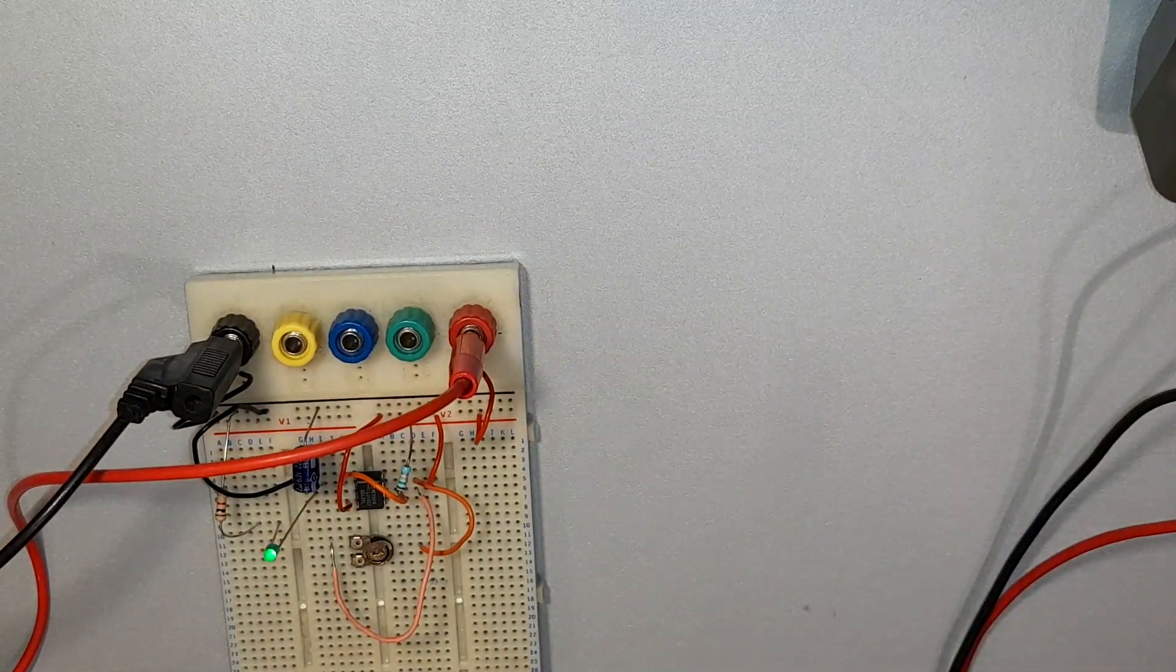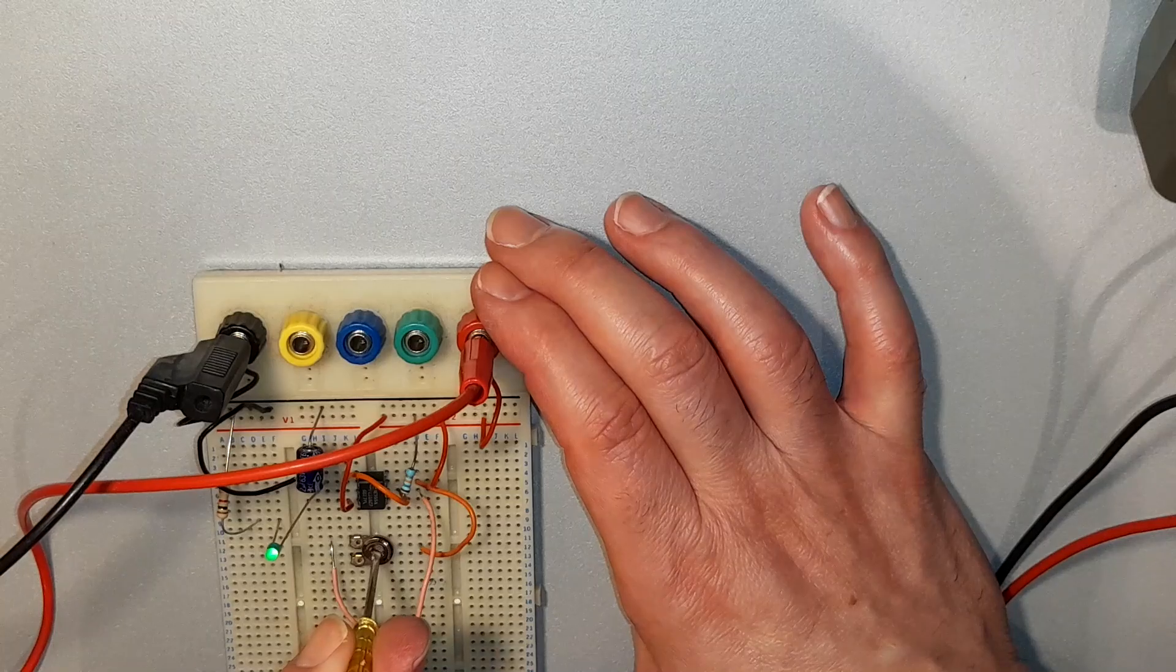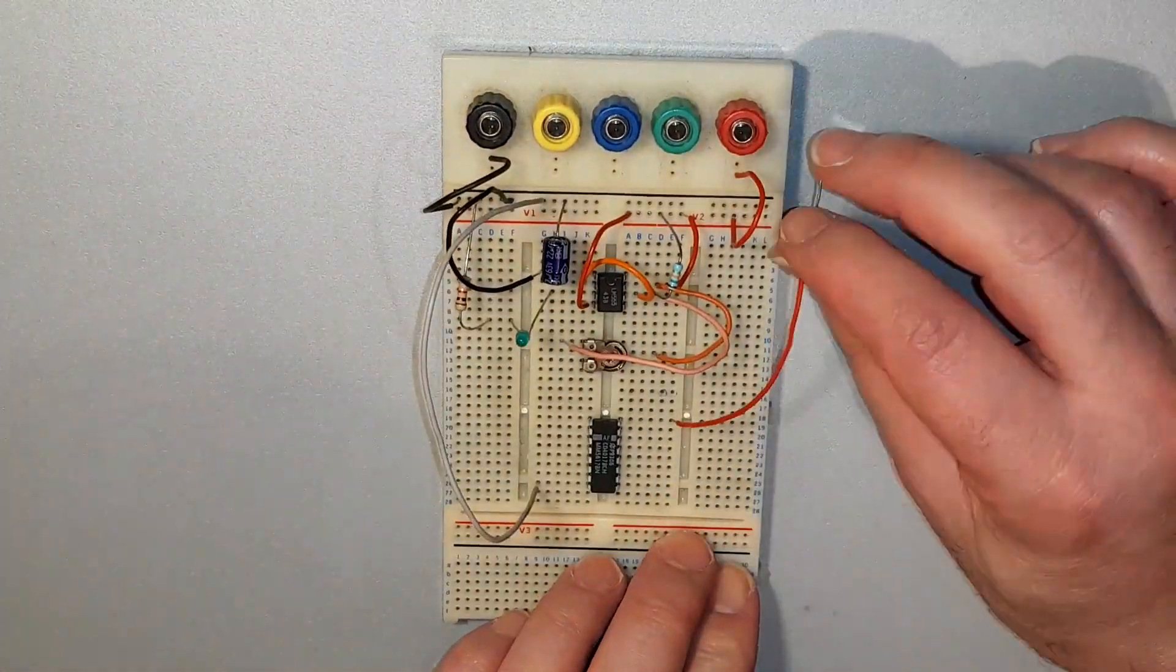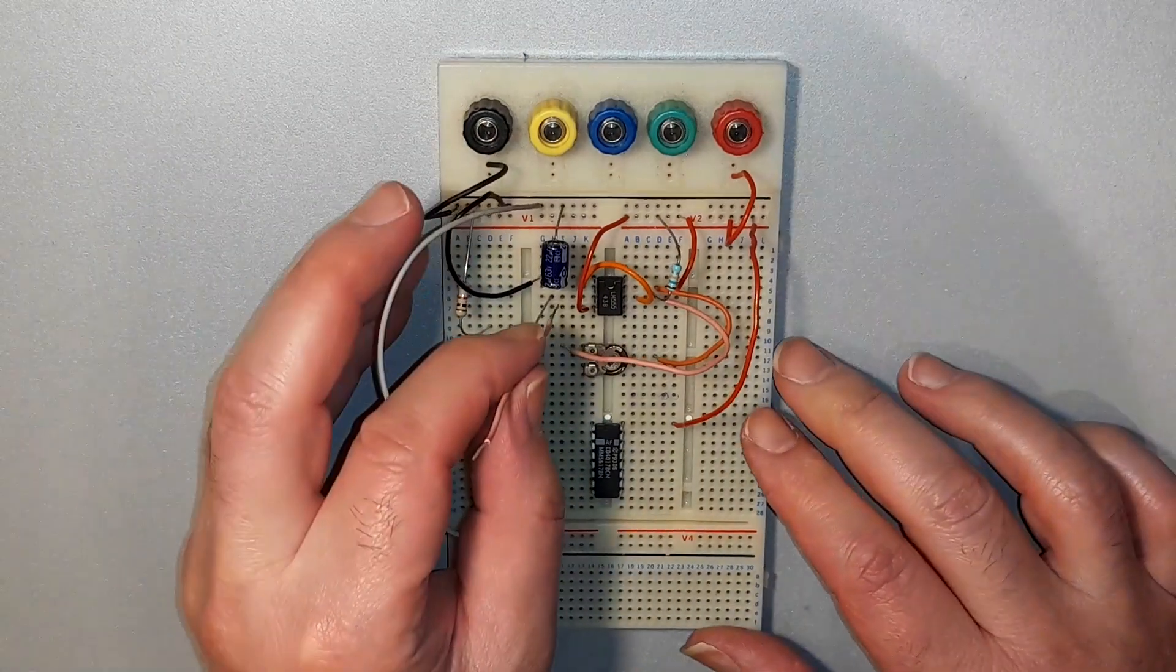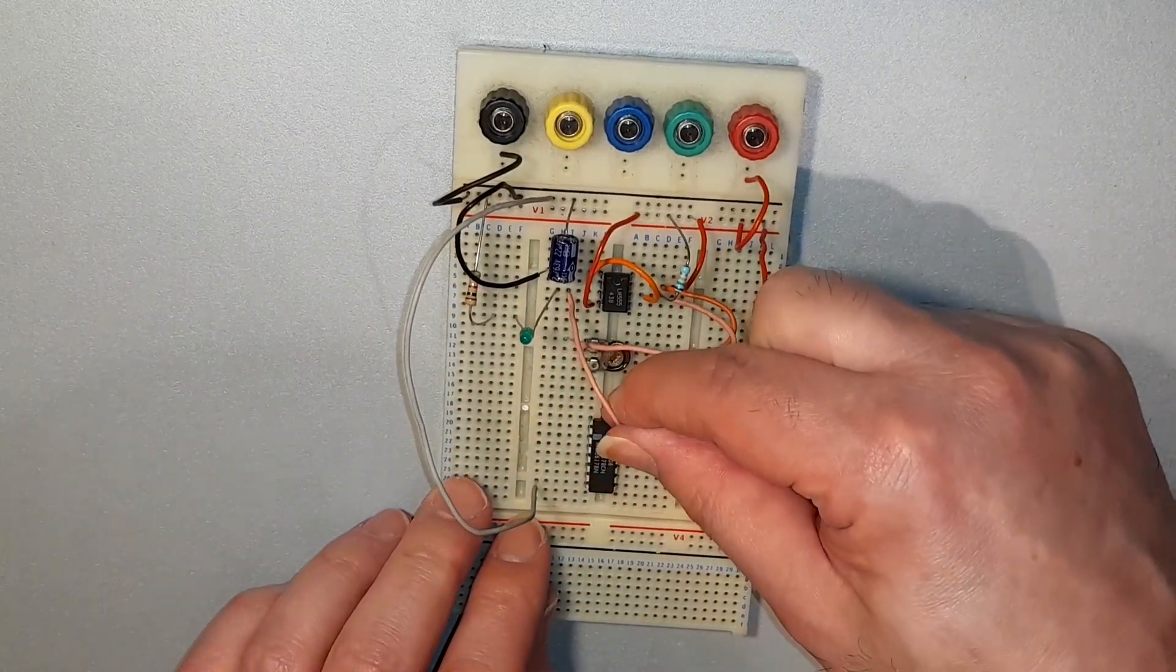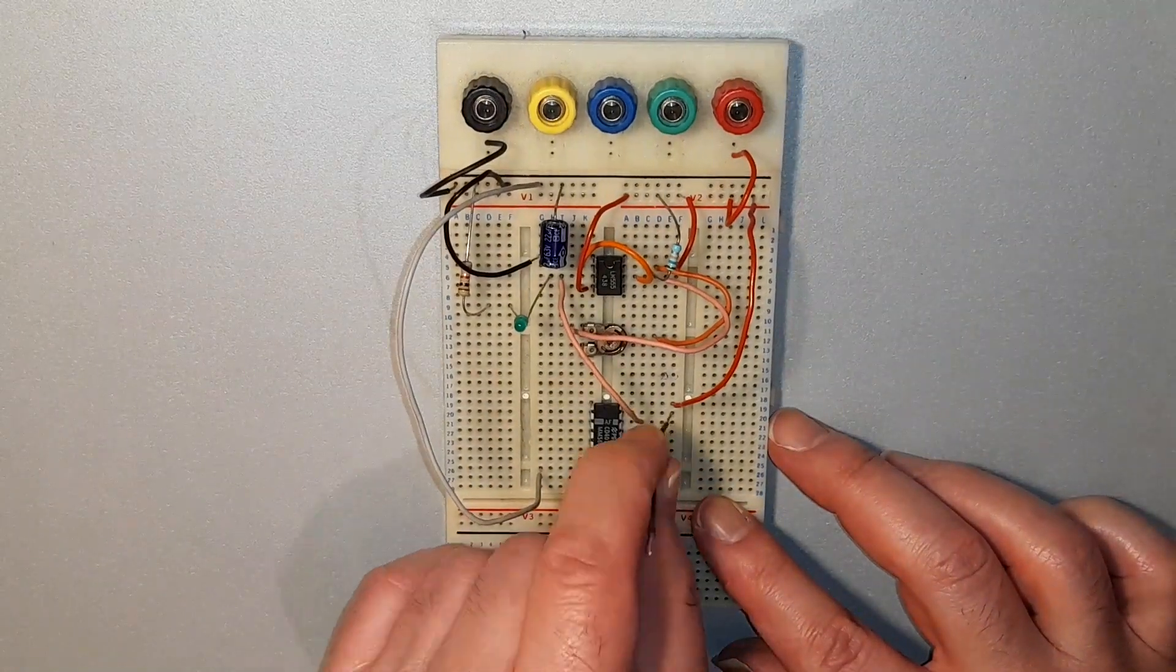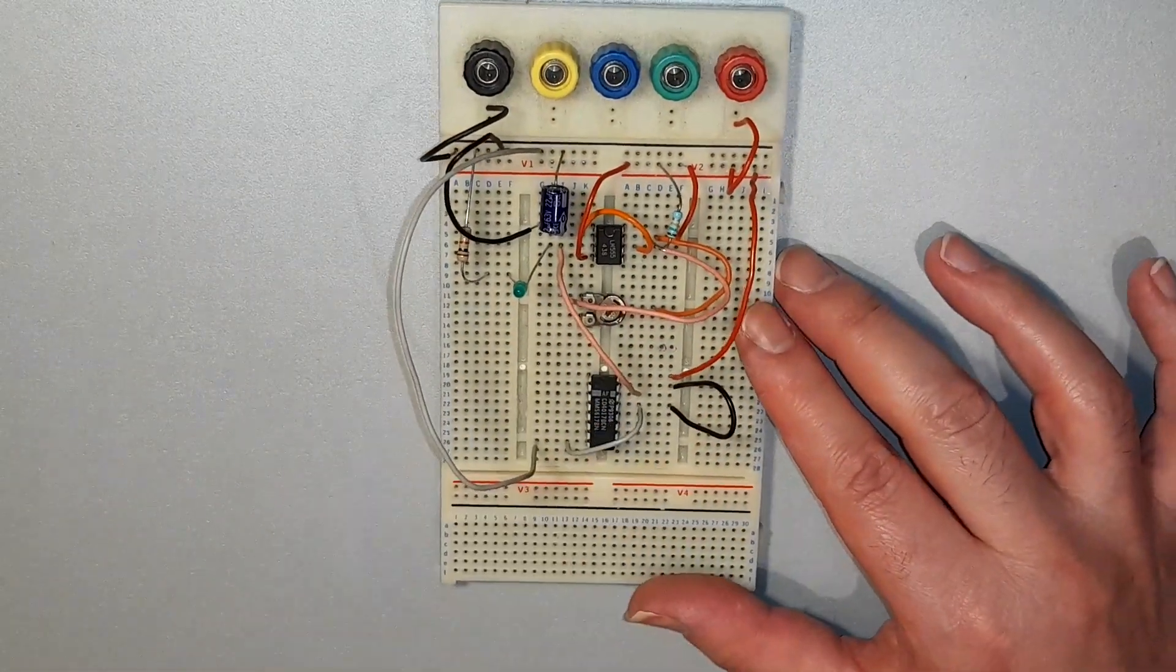With the 555 astable circuit complete, I can now move on to building the 4017 circuit. Starting with pin 8 to negative and pin 16 to positive. Pin 3 of the 555 timer, which is the output, goes to pin 14 of the 4017. Pin 14 is the clock input on the 4017.